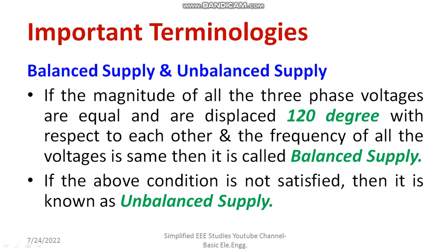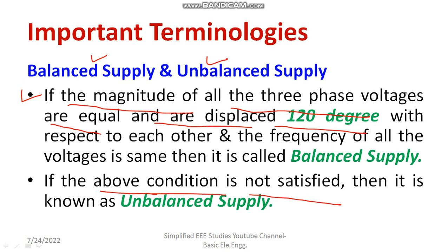There are two types of systems: balanced and unbalanced. Now let's talk about balanced supply and unbalanced supply. Three-phase supply can be divided into balanced supply and unbalanced supply. A three-phase supply is balanced if the magnitude of all three-phase voltages are equal, they are displaced at 120 degrees, and the frequency is the same — 50 Hz. If the above conditions are not satisfied or violated, then we call it an unbalanced supply.